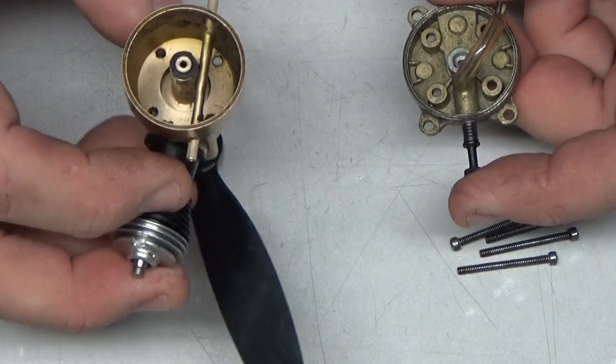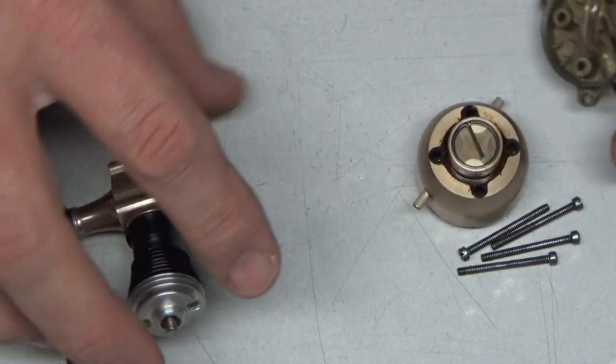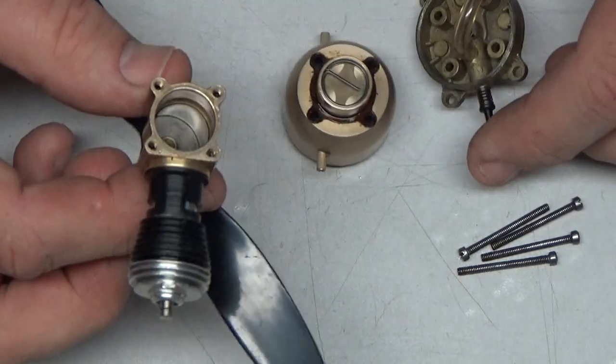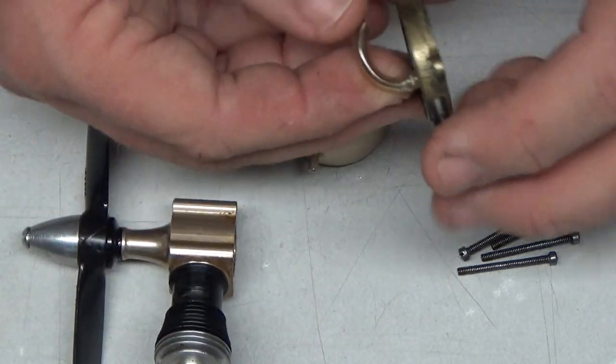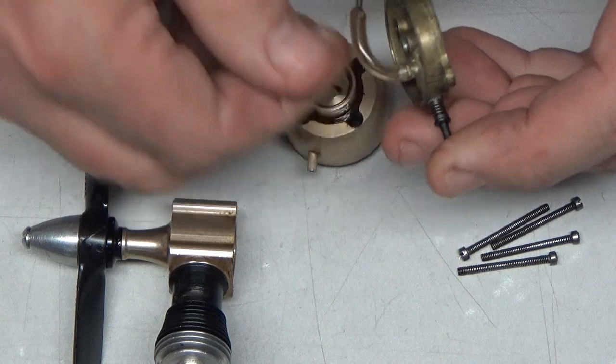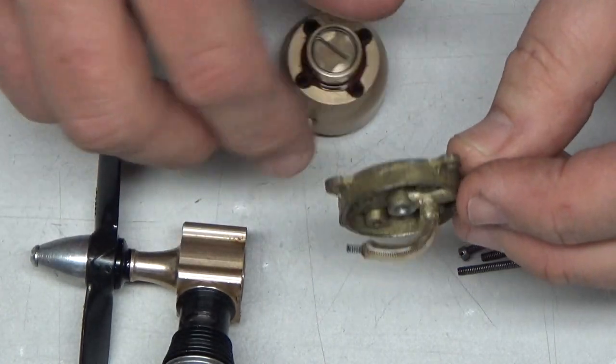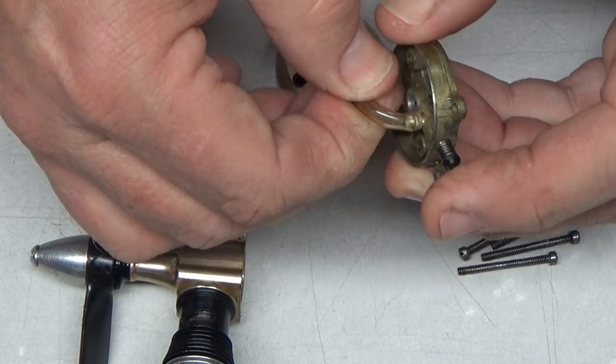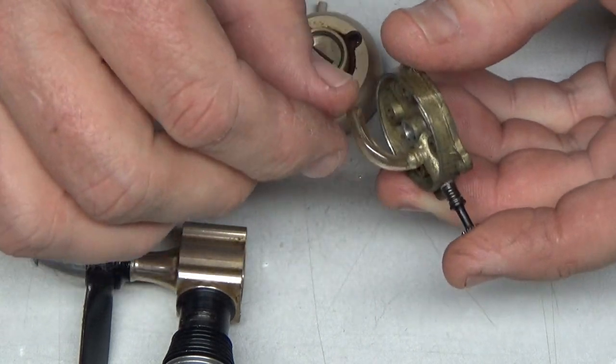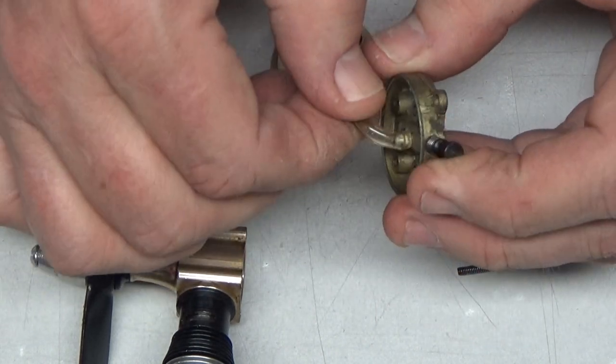But the thing I don't understand is, oh there we go. Very nice. So here's our pickup tube, and apparently there's some little spring in it. This pickup tube feels really, really old and dry rotted.